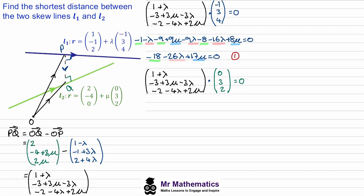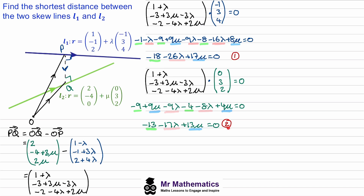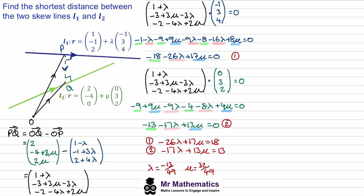Again, when you dot P to Q with the direction of line L2 you'll get cosine of 90, which gives zero. We'll get zero lots of (1 + λ), three lots of the y component, and two lots of the z component. Collecting constant terms, λ terms, and μ terms gives us a second equation, which we'll call equation two. To solve equations one and two simultaneously, we move the constants to the right-hand side.